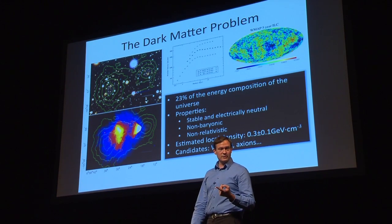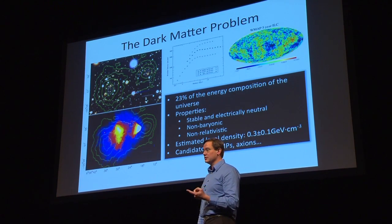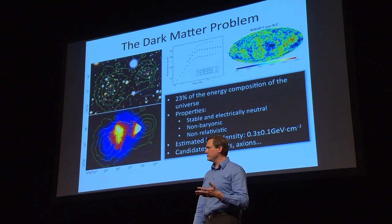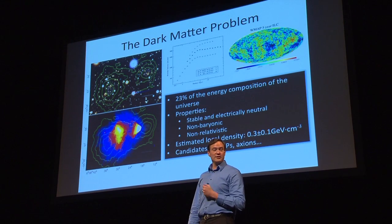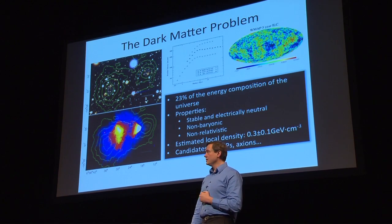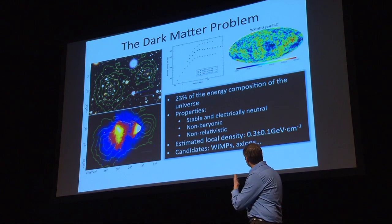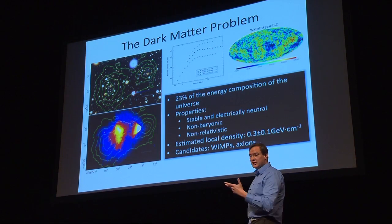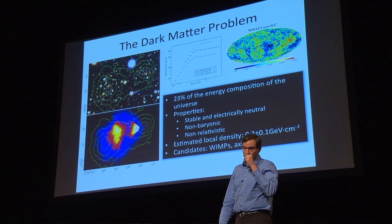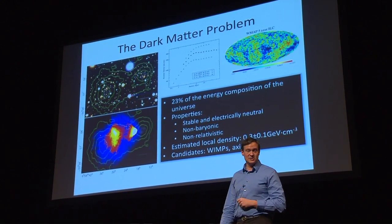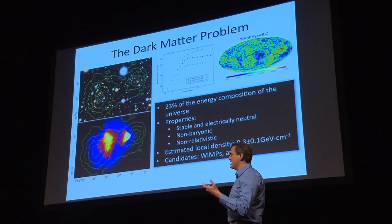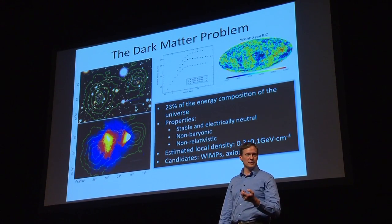Dark matter is something very unusual. It's not made of protons, it's not made of neutrons, it's not made of quarks. It's some new kind of particle that we've never detected before. And 23% of the energy composition of the universe is dark matter. Actually, about 80% or more of the mass of our galaxy is dark matter. Dark matter is what clumps together and causes galaxies to form in the first place. If it weren't for dark matter, none of us would certainly be here.